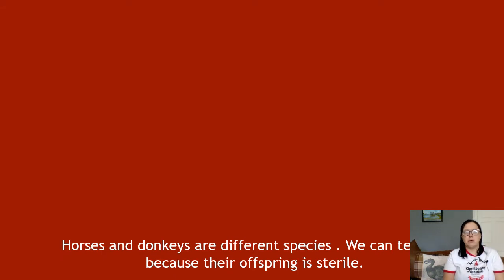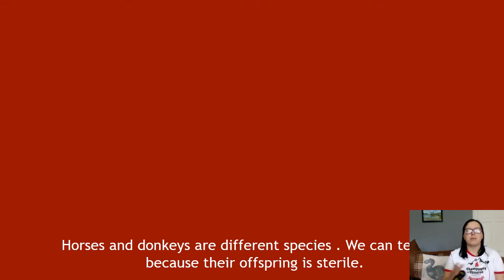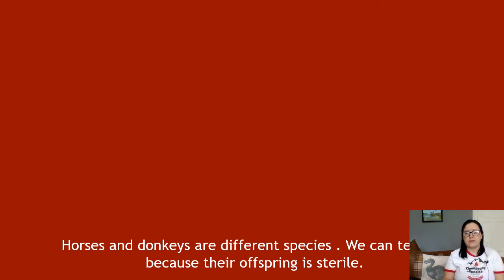Horses and donkeys are different species — we can tell because they make infertile offspring. This helps us with species we don't know whether they're the same or not, because they may look really different. Take dogs as an example: all dogs are the same species, from Chihuahua to Great Dane. Obviously there are a variety of different features — they do look different, different sizes and so on. But we know they're the same species because when we breed two together, the offspring are fertile.